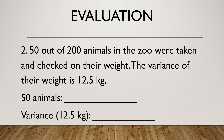Second, 50 out of 200 animals in the zoo were taken and checked on their weight, and the variance of their weight is 12.5 kilograms. Are these 50 animals considered a population or a sample? And is the variance of 12.5 kilograms a parameter or a statistic?